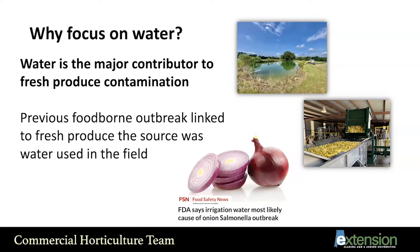Why do we need to focus on water? Water is the major contributor to fresh produce contamination. Previous foodborne outbreaks linked to fresh produce — the major source of contamination was water used in the field. For example, the huge outbreak last year related to onions and salmonella contamination — FDA just released a note saying irrigation water was most likely the cause. And a few years ago, the romaine lettuce outbreak linked to pathogenic E. coli was also tracked back to water sources.